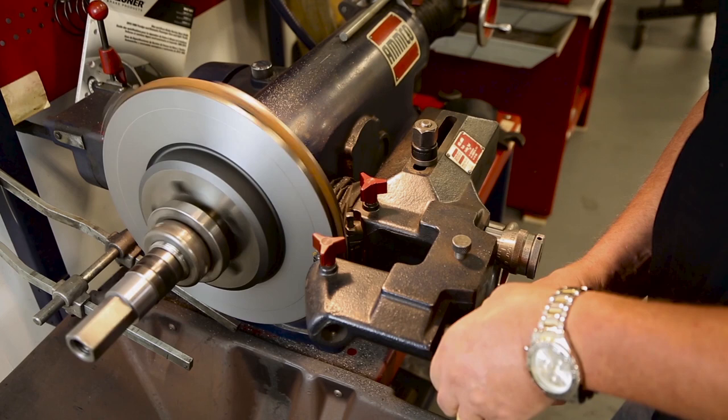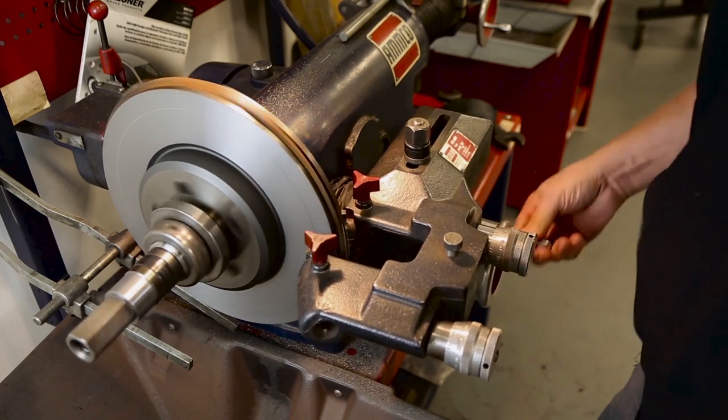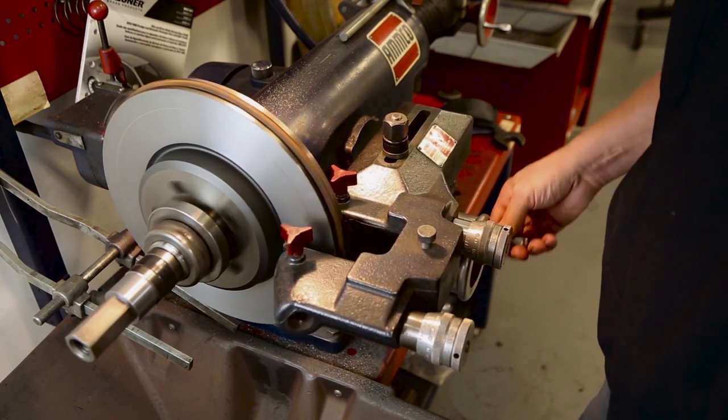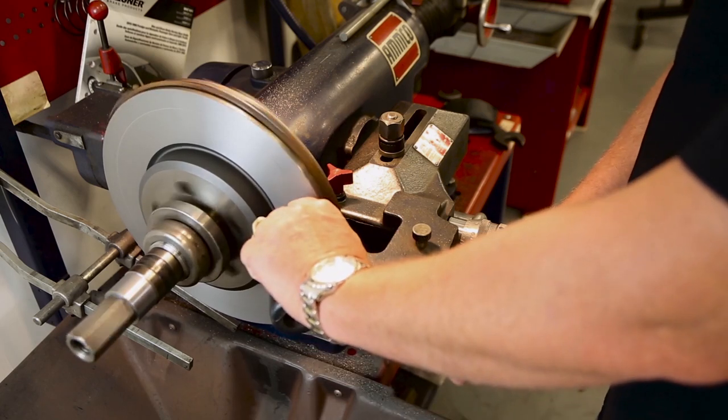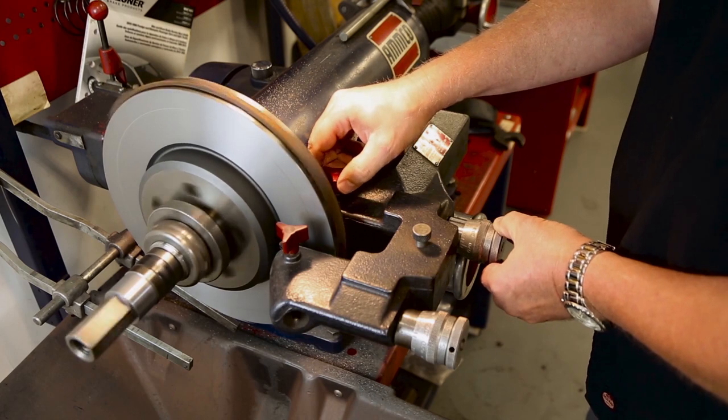Center or zero our stops. We'll run the table feed in. Give it two thousandths for our finished cut. Two thousandths on the inside.